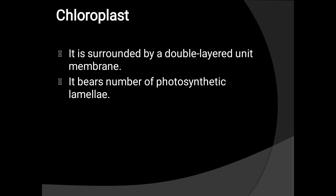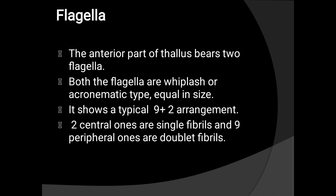Chloroplast. It is surrounded by a double-layered unit membrane. It bears a number of photosynthetic lamellae. Flagella. The anterior part of the thallus bears two flagella. Both flagella are whiplash or acronematic type, equal in size. They show a nine plus two arrangement: two central ones are single fibril and nine peripheral ones are double fibril.